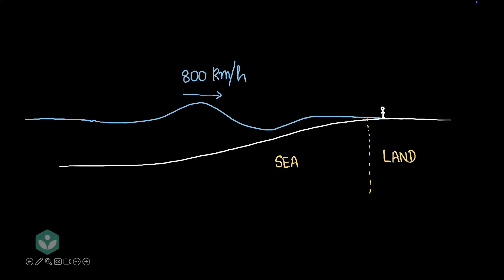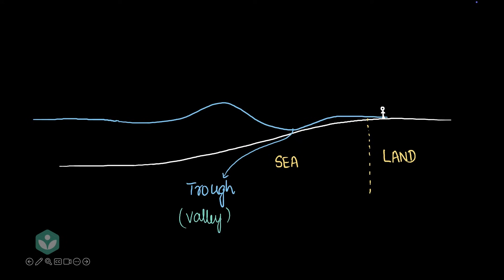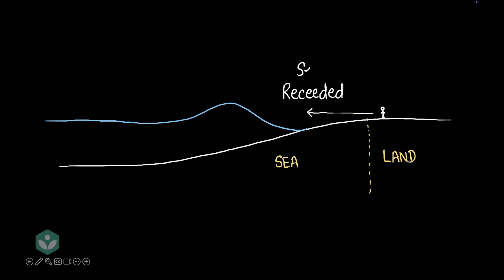So now as this wave moves towards land, you'll notice that the trough here is getting closer to land. When the trough hits land, like in this picture, you'll see that the sea will recede back. What does that mean? That means that that dividing line between sea and land is shifted to this point. That means that it'll appear as if the sea has gone back.